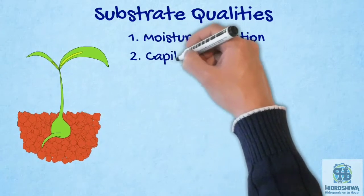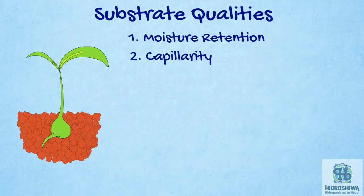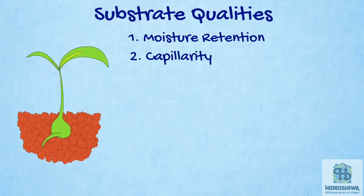The second property is capillarity. This property consists in the fact that the substrate has the capacity to absorb and distribute the nutrient solution in all directions through the micropores. When the substrate has a good capillarity, the water is absorbed in all directions, making the roots of the plants find a homogeneous humidity throughout the container.